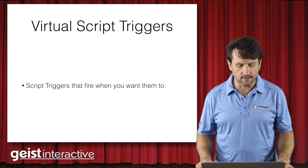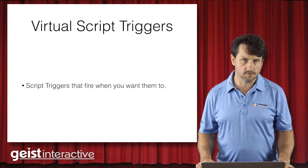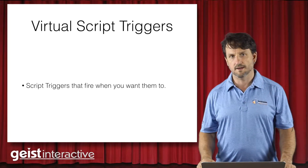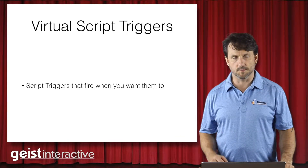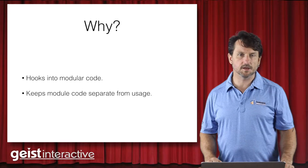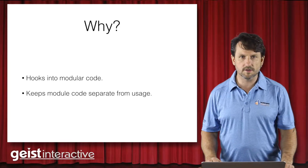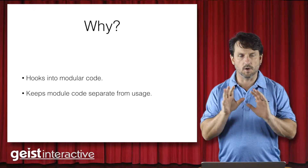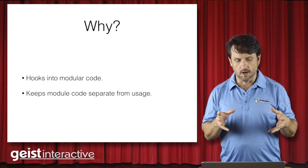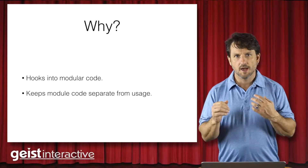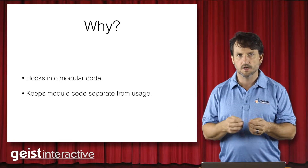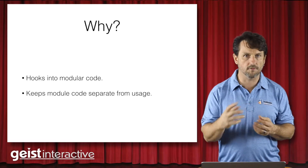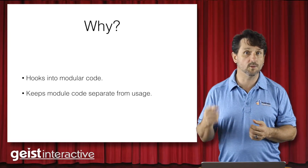A virtual script trigger is something that gets fired when we want it to. Regular script triggers get fired when FileMaker decides, based on those events. A virtual script trigger is one we create that fires whenever we want — usually in response to some script action. The reason for doing that is it gives us another way to hook into modular code. When we design a feature, we want to keep the core code encapsulated and tight, and we don't want to modify it every time we use that feature. We want the script that runs at the end of a process — like a picker, slider, or wizard — to be assignable whenever we use that module.